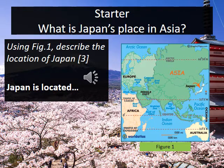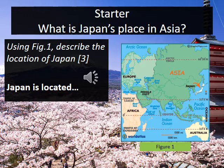First, a quick activity to get us started and a reminder of the things that we looked at last week. I want you to have a go at finishing this sentence: Japan is located... Remember all the facts about the continent, the oceans etc. that we looked at last time when trying to complete that sentence. It's absolutely fine if you need to go back and remind yourselves.